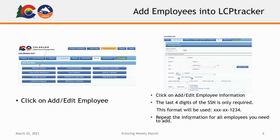The first thing you'll do is add your employees into the system. This is where you enter the information about the employees, such as the name, address, and other information you'll need for each employee's payroll. Only the last four digits of the social security number are required, in the format XXX-XX-1234, using whatever the last four digits of the employee's social will be. You will repeat this for all employees you need to add.